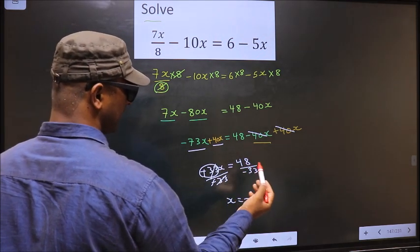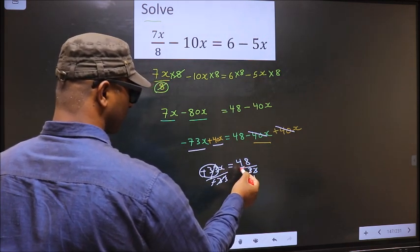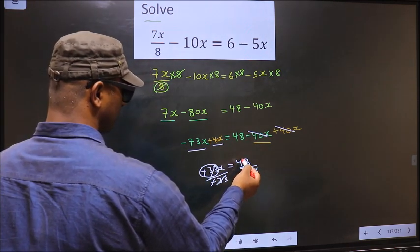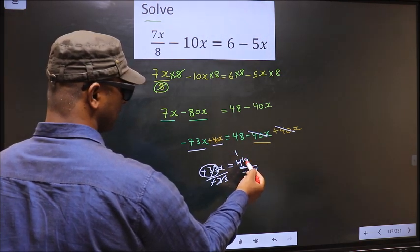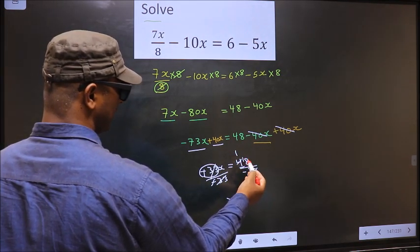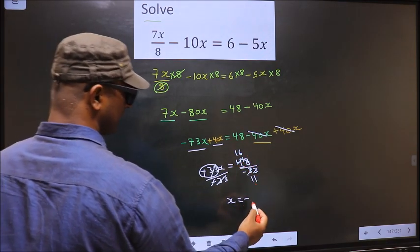Now let us cancel these numbers using the 3 table. 3 ones is 3. The number close to 4 in the 3 table is 3 ones 3. 4 minus 3 is 1, carried forward making it 18. When do we get 18 in the 3 table? 3, 6, 18. We cannot cancel any further.